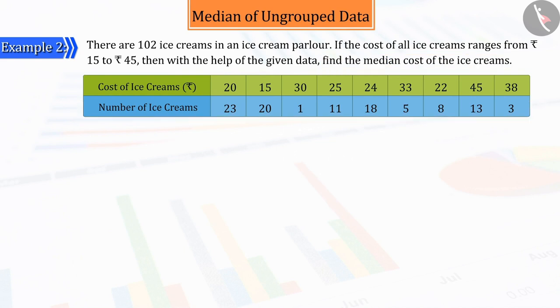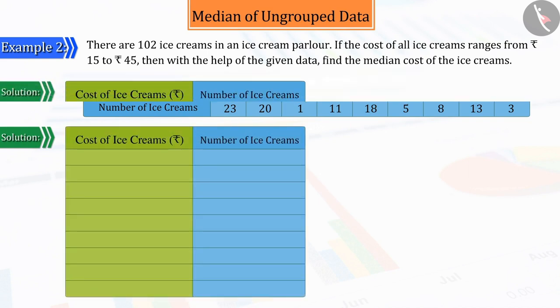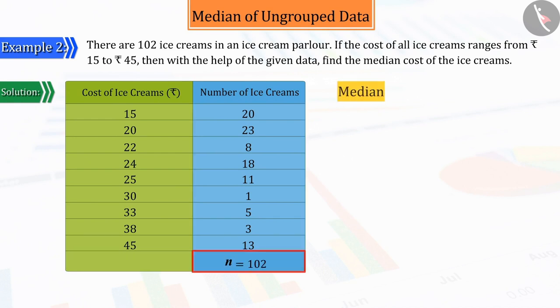Let us try to solve this. We know that for median, we first need to arrange the data in ascending order and display in the following way. Given that the number of ice creams, that is n, is 102, which is an even number.